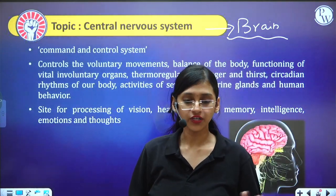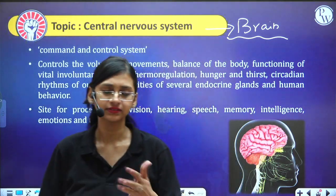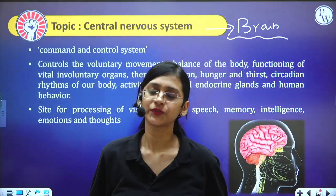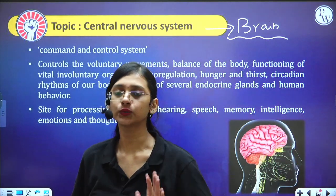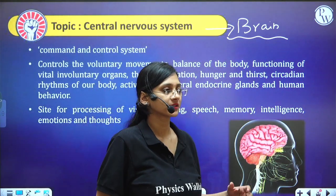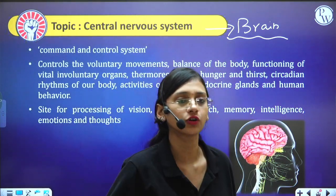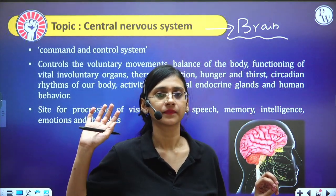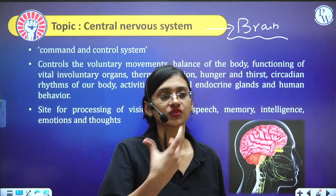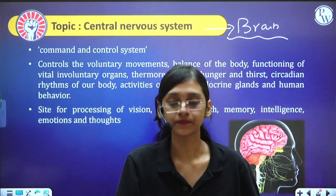Thermoregulation is also controlled by the brain — specifically the hypothalamus maintains body temperature at 37 degrees Celsius. The brain also controls hunger, thirst, and circadian rhythm. Circadian rhythm is a 24-hour internal body clock: your body knows when to wake up and when to sleep based on your daily routine, without needing an alarm.